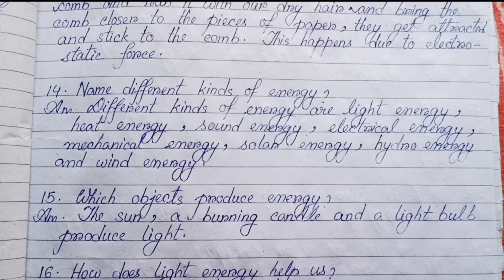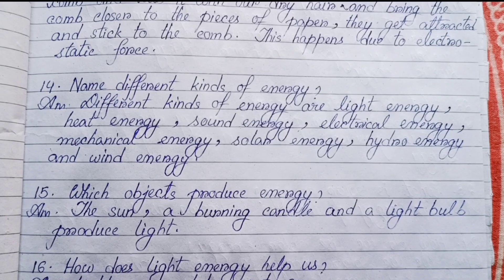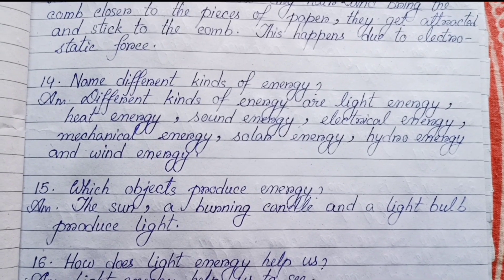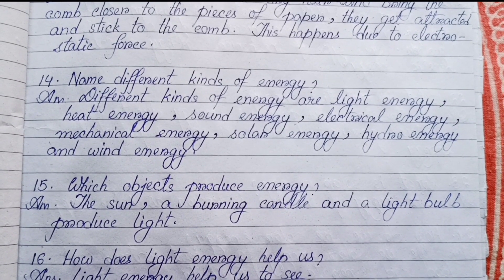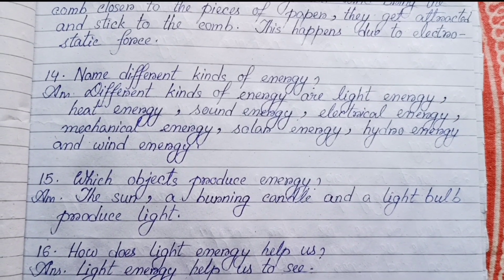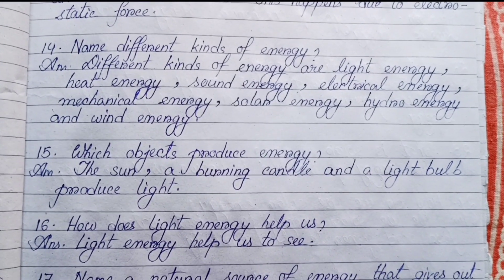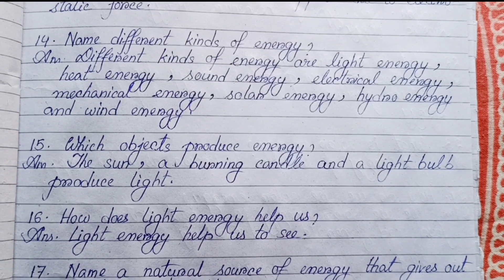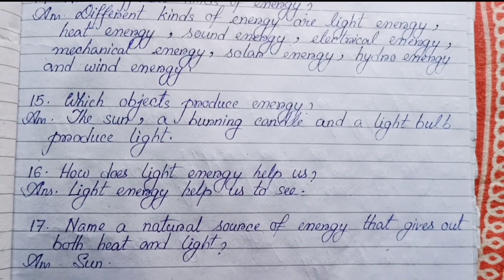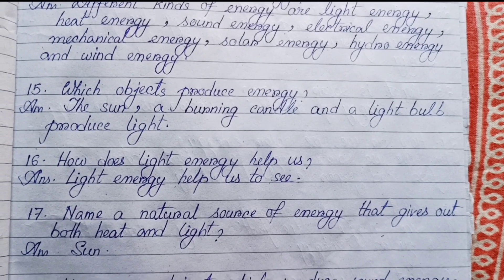Number fourteen: Name different kinds of energy. Different kinds of energy are light energy, heat energy, sound energy, electrical energy, mechanical energy, solar energy, hydro energy, and wind energy. Number fifteen: Which objects produce energy? The sun, a burning candle, and a light bulb produce energy.